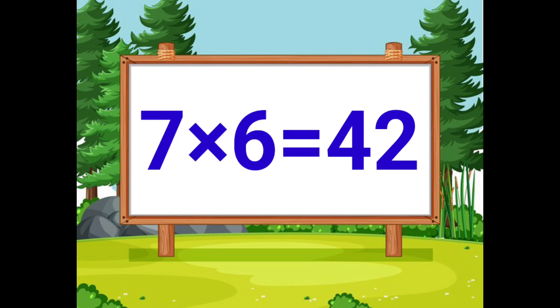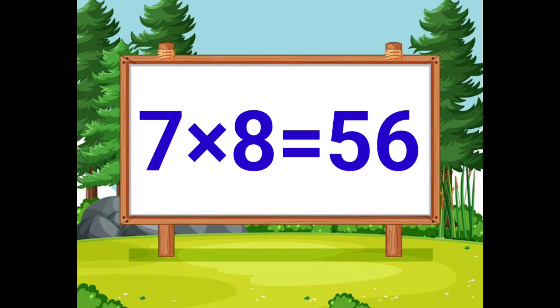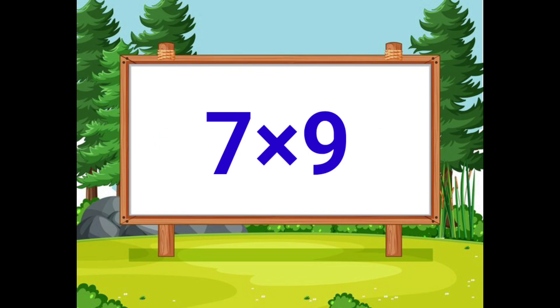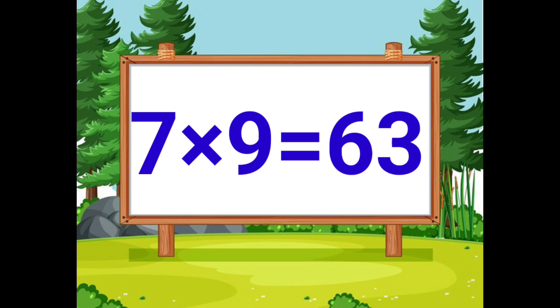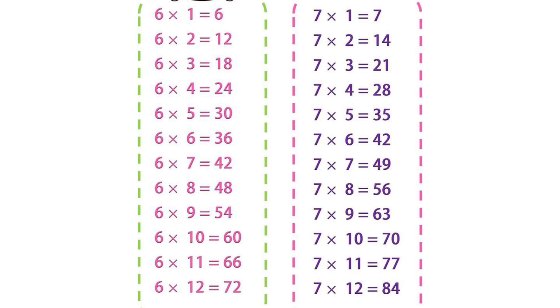7 sixes are 42. 7 sevens are 49. 7 eights are 56. 7 nines are 63. 7 tens are 70.